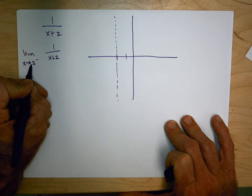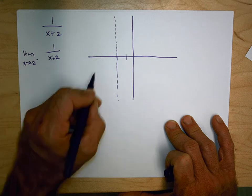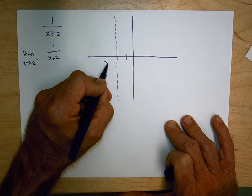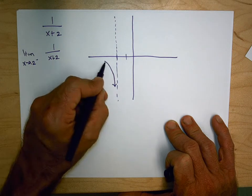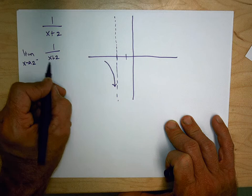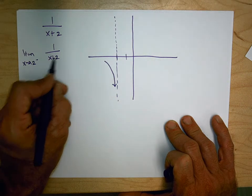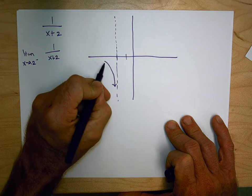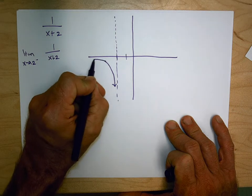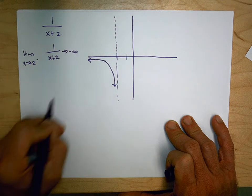We're approaching negative 2 from the left, and the function is decreasing very quickly. For values farther away — like negative 12 — adding gives negative 10, so 1 over negative 10 is negative one-tenth. The farther we get from negative 2, the closer the function gets to 0. So this left-hand limit seems to tend to negative infinity.